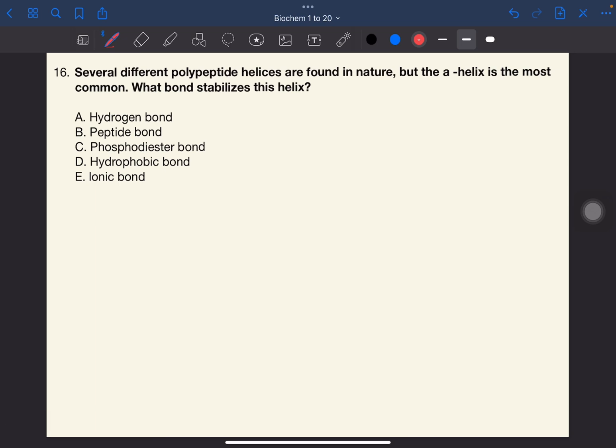Number 16. Several different polypeptide helices are found in nature, but the alpha helix is the most common. What bond stabilizes this helix? The answer to this one is A, hydrogen bonds.